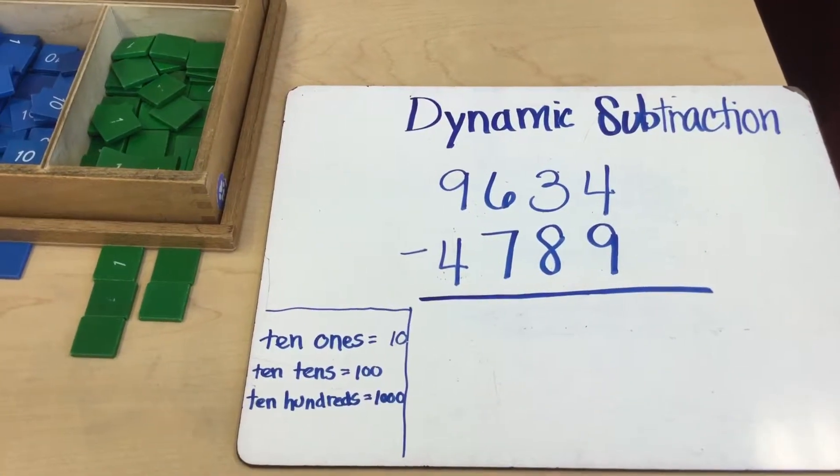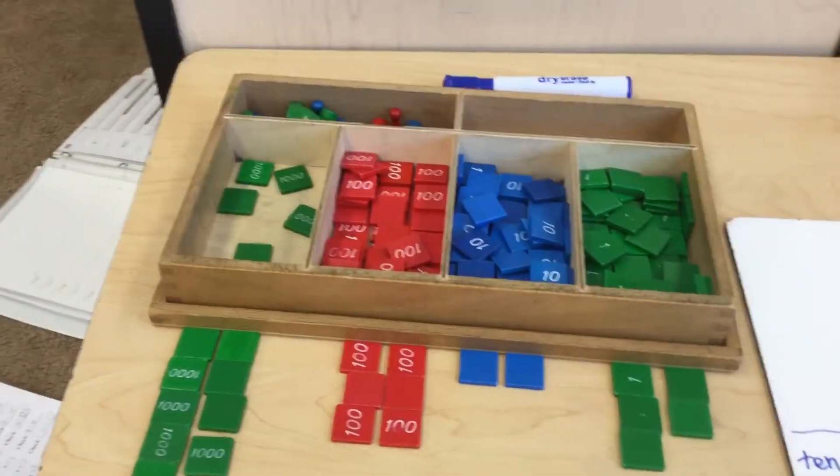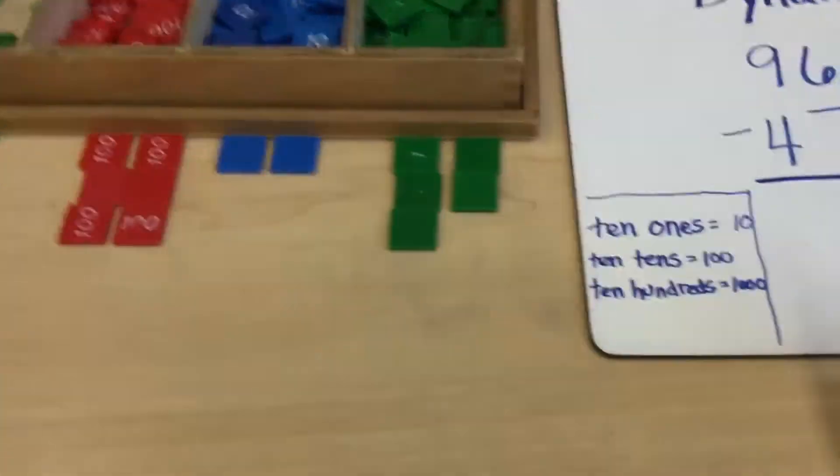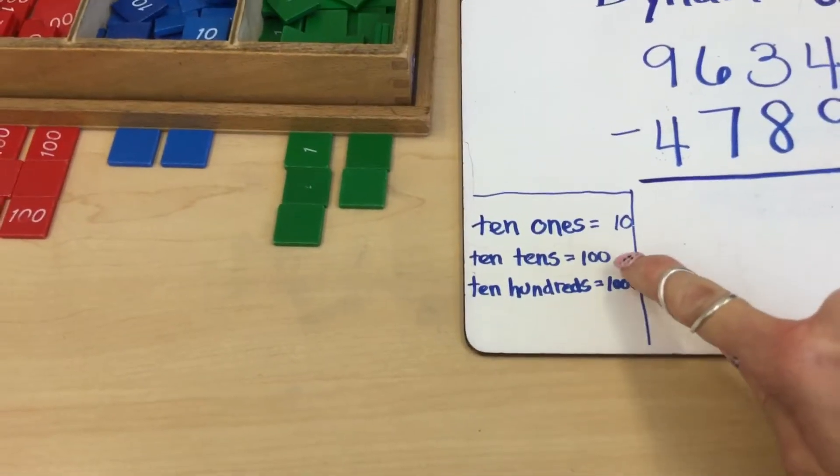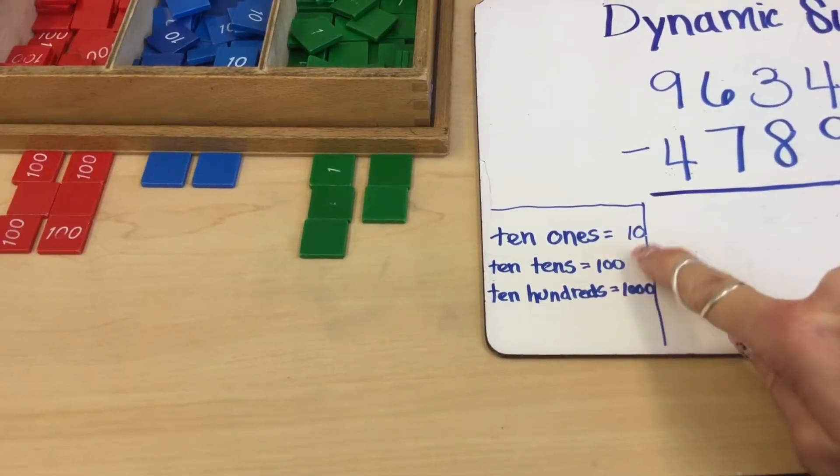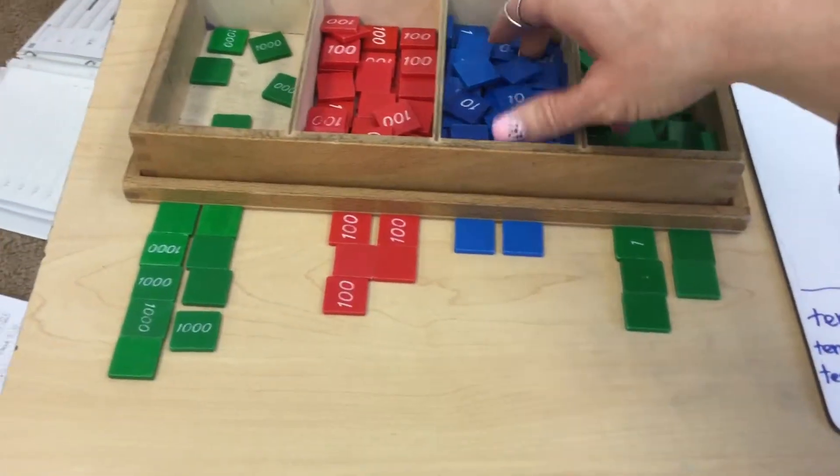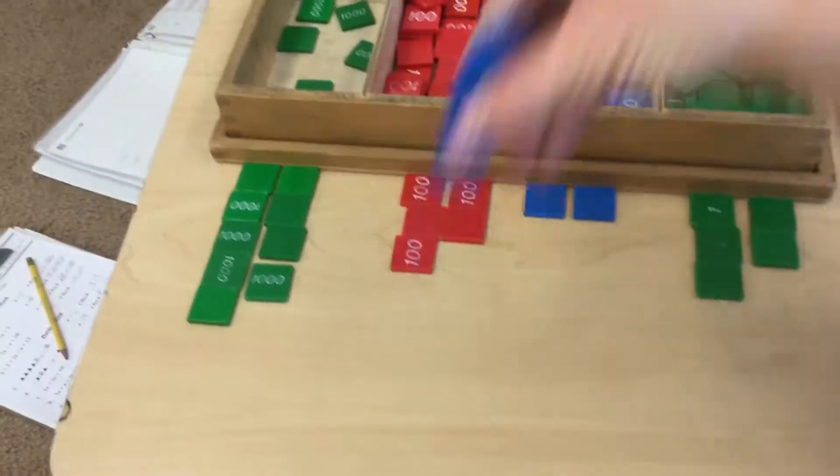Moving over to my tens. According to my equation I need to take away eight. Well right now I only have two, so I need to find some more tens. If I can go to my hundreds, I can borrow from my hundred and exchange a hundred to get ten tens. So I'm going to take one of my hundreds, put it in the stamp game, and I'm going to grab out ten tens.